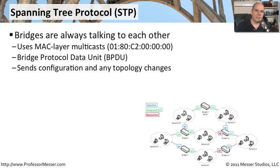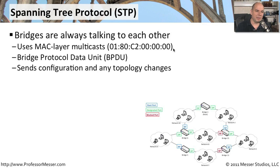With the Spanning Tree Protocol, these switches on your network, which are really just big bridges, are constantly communicating with each other. They're talking to each other using the MAC layer MAC address. It's a multicast that is sending to 0180C2000000. And it's constantly sending little hello packets out to each other. Because it's sending with a multicast protocol, not every device on the network is even going to bother looking at them. The only devices interested in seeing these are the switches, and they're the ones that will pick up these packets and process them once received.